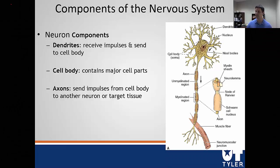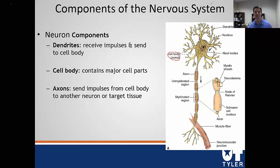The first major part that all cells are going to have is a cell body, otherwise known as the soma. The soma is essentially the main hub of a cell — it contains all the major cell parts including the nucleus, mitochondria to make energy, the ER, and all the main components of the cell. We then have dendrites, which extend outside of the cell body. Their job is to receive impulses and communication from outside, and then send them into the cell body for processing. This nerve has several different dendrites that come out, and in theory another nerve on the other side would be talking to each one of these dendrites.